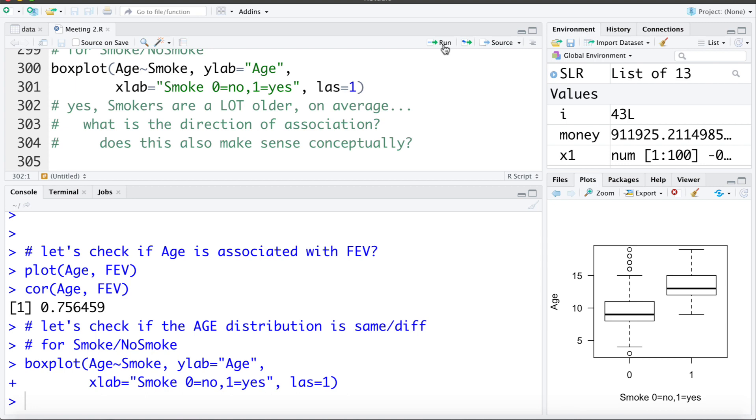Does this association make sense conceptually aside from just being numerically present in the data? Well sure it does. As kids get older they're more likely to become a smoker. It doesn't mean they're going to. Age is going to be associated with whether or not they smoke.